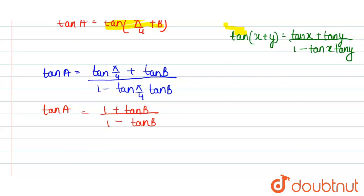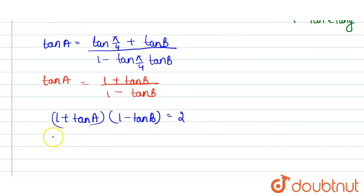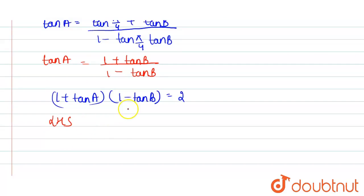Now put the value of tan A in this expression. So here we get, write the given expression here, that is 1 plus tan A into 1 minus tan B is equal to 2. So to prove this, take left hand side, that is 1 plus tan A into 1 minus tan B. And in place of tan A, put this value.